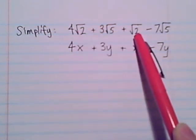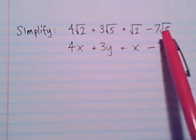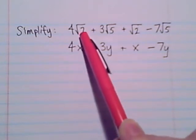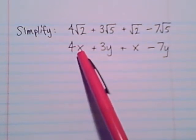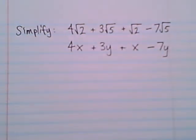So if I write an expression like 4x + 3y + x - 7y, the reason I wrote this expression is because we know that these are like terms because they have the same variable, and these are like terms because they both have the same radicand. They're both a radical 2.